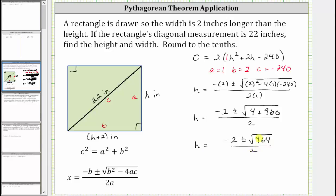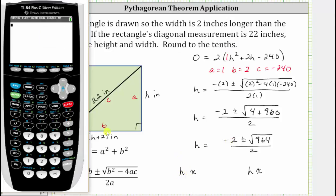And now let's approximate the two solutions to the nearest tenth using the calculator. For the first solution, we have the quantity negative two plus the square root of 964. To get out from under the square root, we press the right arrow, close parenthesis, and then divide it by two, which gives us approximately 14.5.